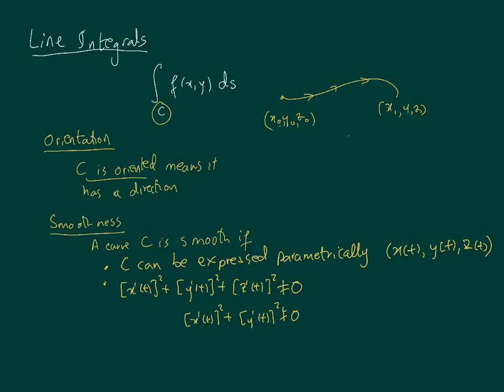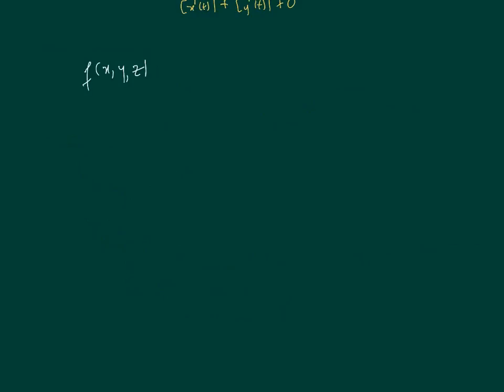For any function f(x,y,z), if it is continuous in some region D which contains the path or curve C, and C is smooth, then this means we can parametrize it. With t between a and b, the line integral ∫f(x,y,z)ds is calculated by converting all of these using the parametrization.